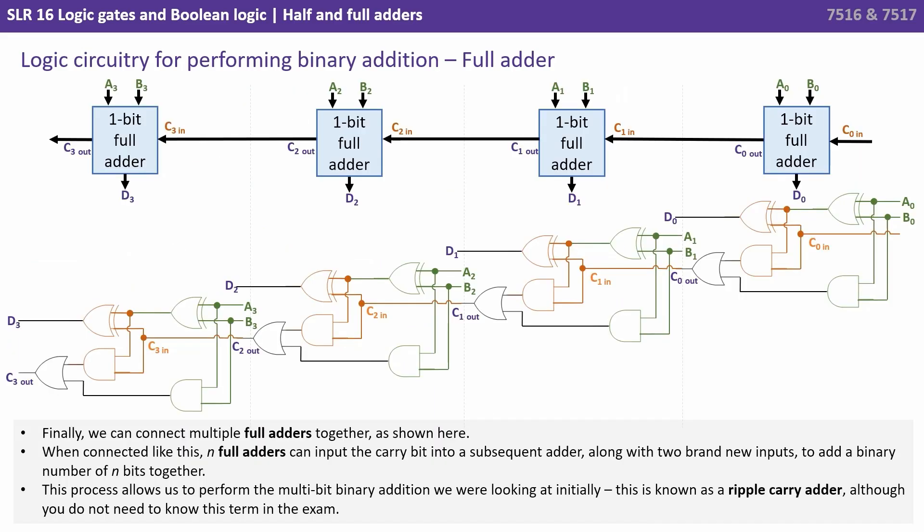Finally we can now connect multiple full adders together as shown here. When connected like this, n full adders can input the carry bit into a subsequent adder. Along with two brand new inputs to add a binary number of n bits together. This process allows us to perform the multi-bit binary addition that we were looking at initially at the start of the video.